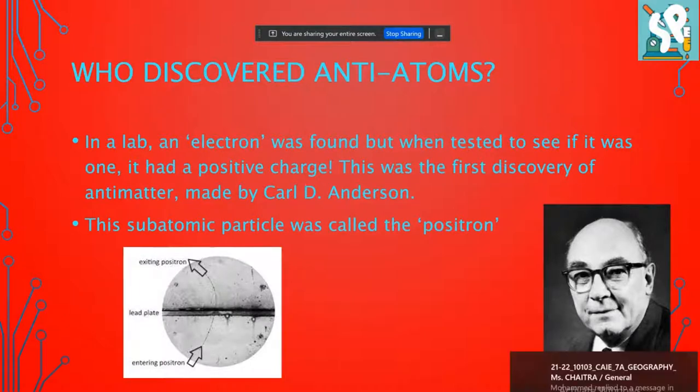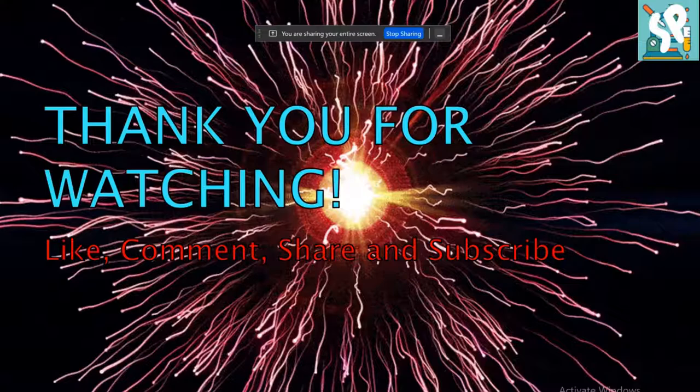So basically, to test out subatomic particles to see what kind of charge they have, they are run through a special machine. But this machine has shown that something which behaves like an electron has a positive charge. This was actually the positron, or the first discovery of anti-matter.